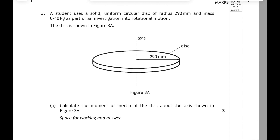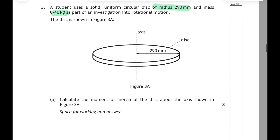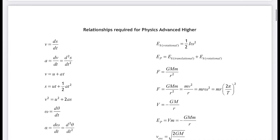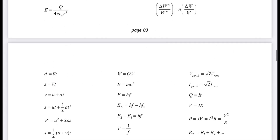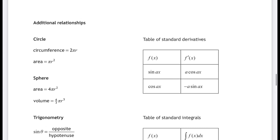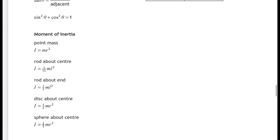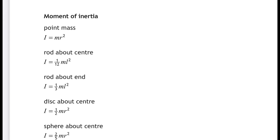A student uses a solid uniform circular disc of radius 290mm and mass 0.4kg as part of an investigation into rotational motion, and we have to calculate the moment of inertia of the disc about the axis shown in figure 3A. The relationships for moment of inertia are not on the main page of relationships — they're right at the back of the relationship sheet under 'additional relationships', and underneath all the maths ones there you can see moment of inertia.